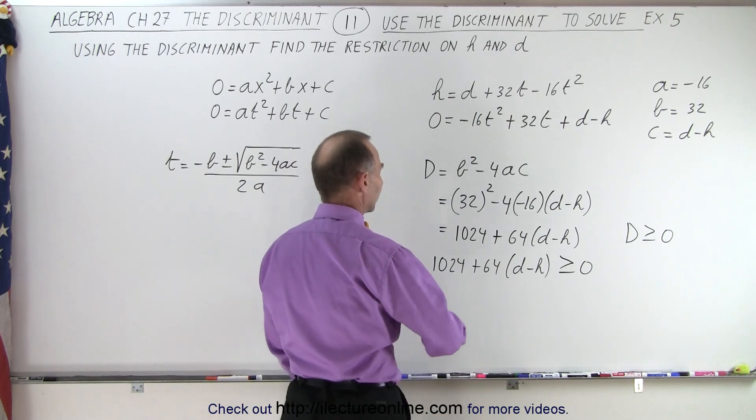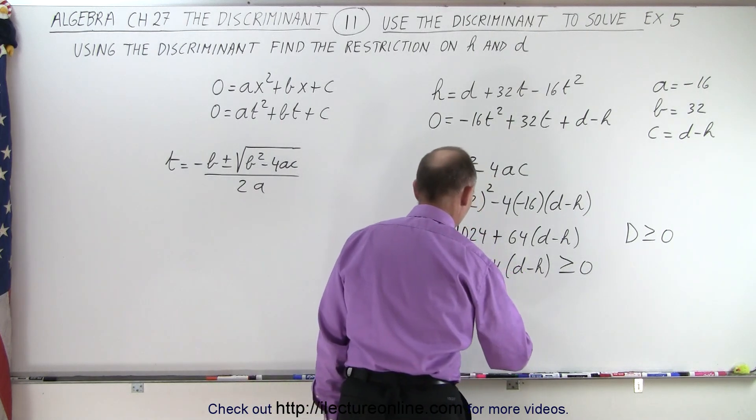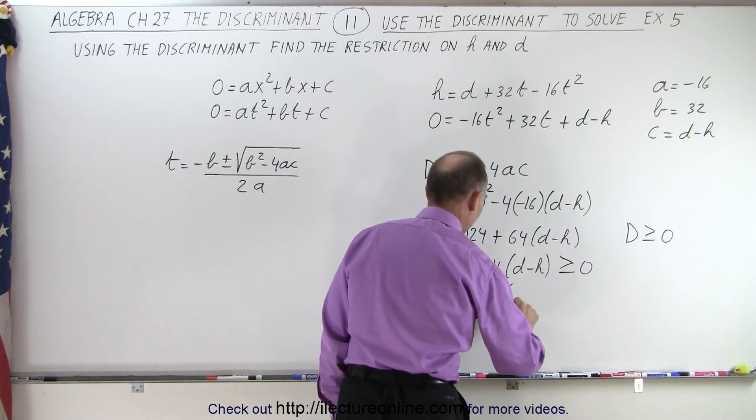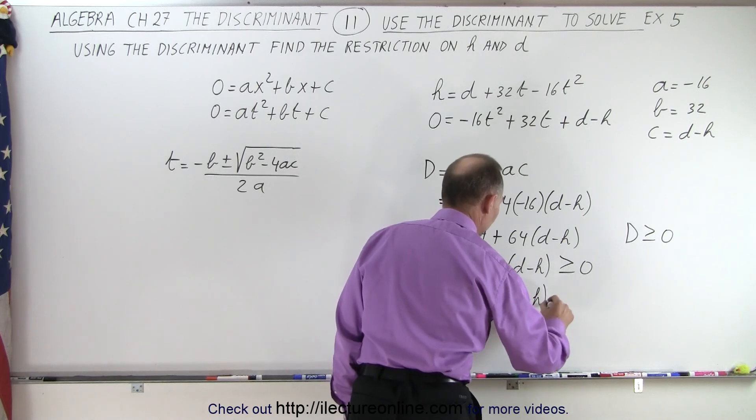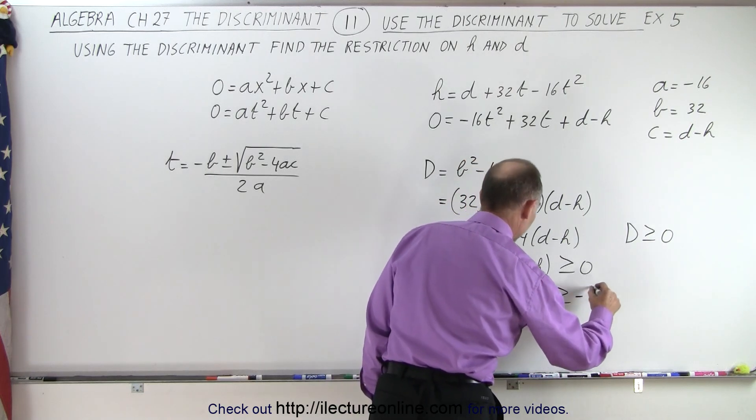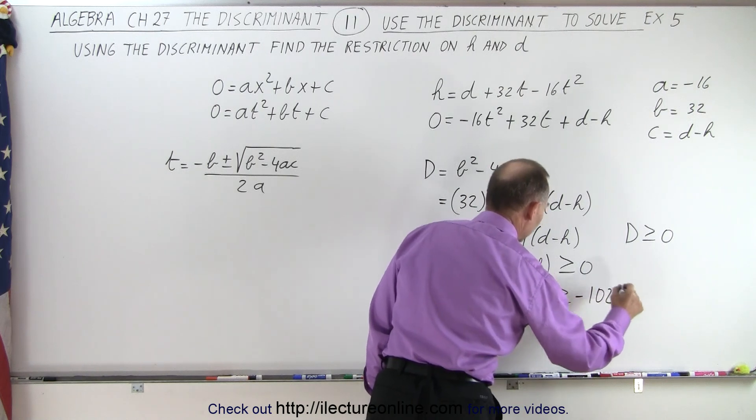Let's see here. So we'll move this across over here. So we have 64 times d minus h is greater than or equal to minus 1024.